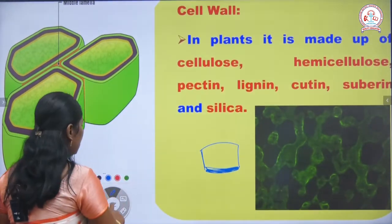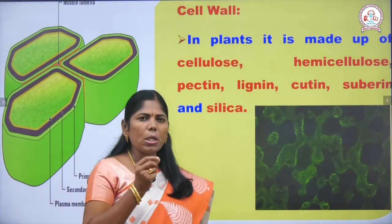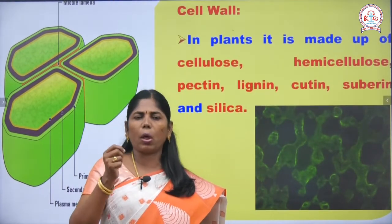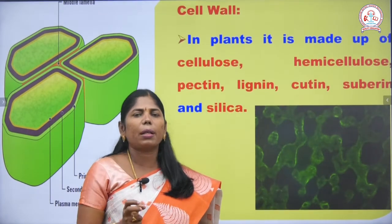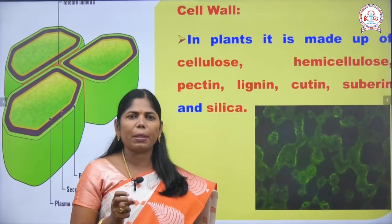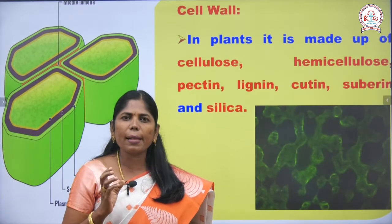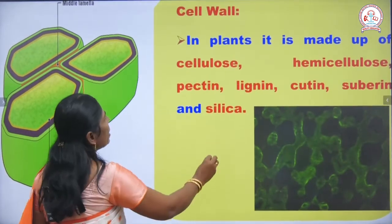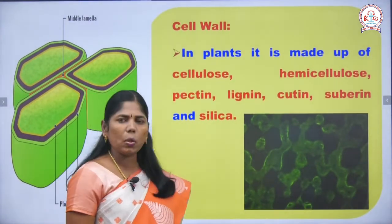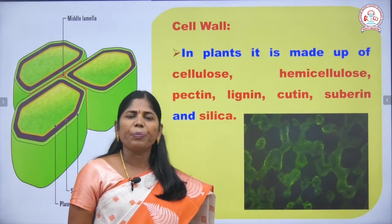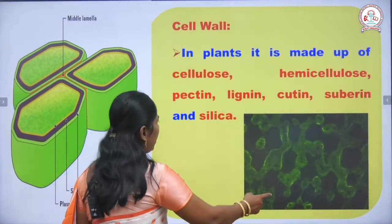The next cell wall material is silica. Because of the presence of silica, the thorns are very, very strong. So the cell wall materials of plants include cellulose, hemicellulose, pectin, lignin, suberin, and silica.